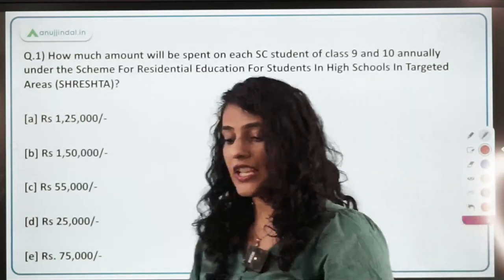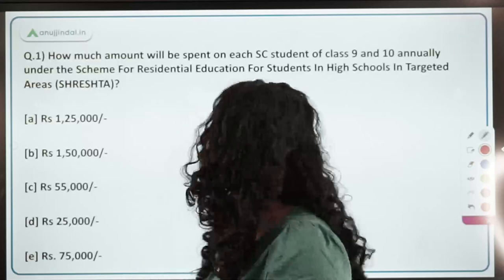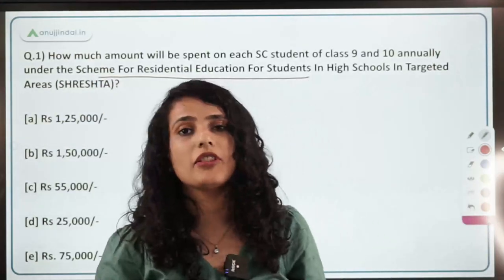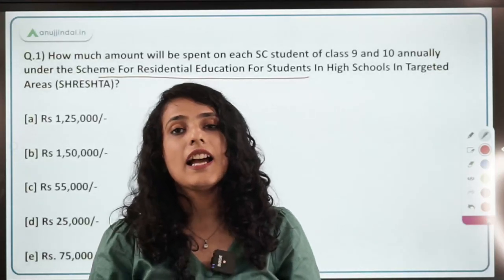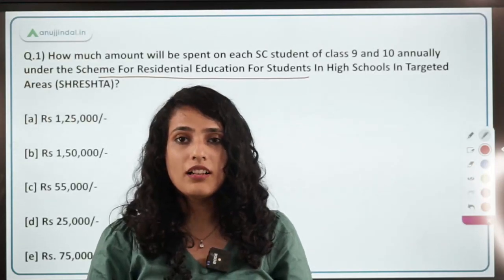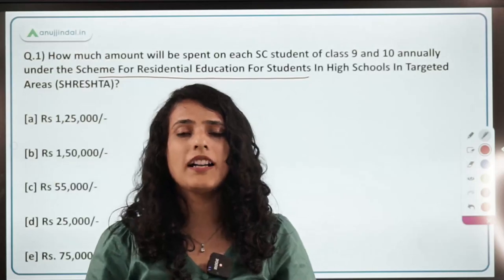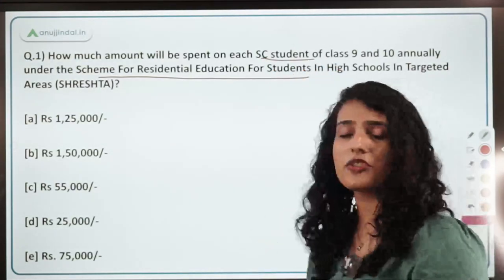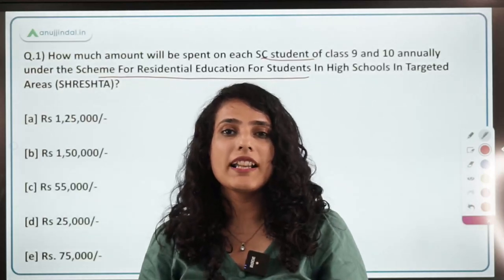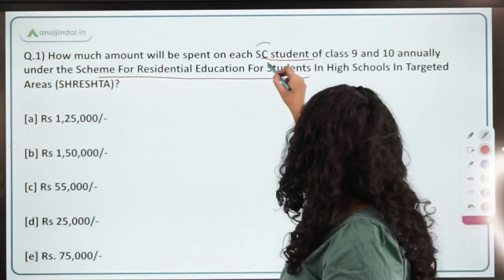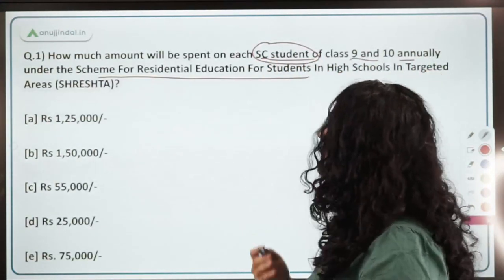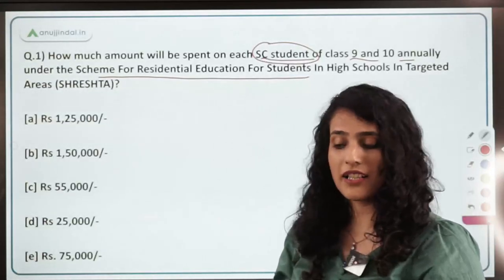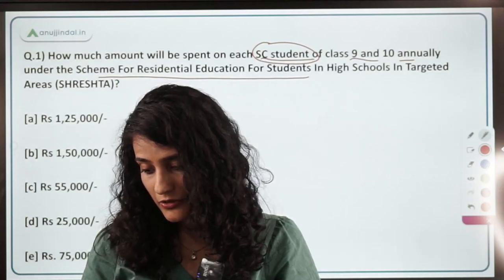Let's start with the very first question of the day. The Ministry of Social Justice and Empowerment has launched a scheme named Shrestha — a residential education scheme for students where all education and residential expenses are borne by the Department of Social Justice and Empowerment under the ministry, as per the constitutional mandate to make quality education available even to the poorest of the poor. The target is Scheduled Caste students from Class 9th and 10th who will undergo the annual Shrestha program. The question asks how much amount will be spent per student per annum.